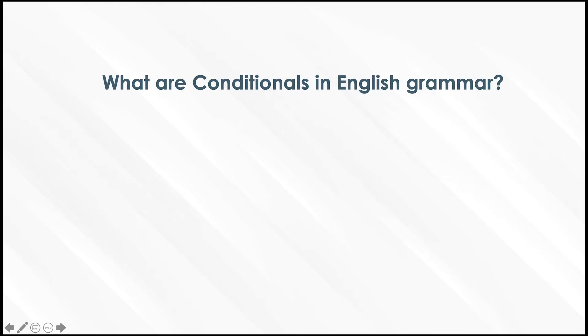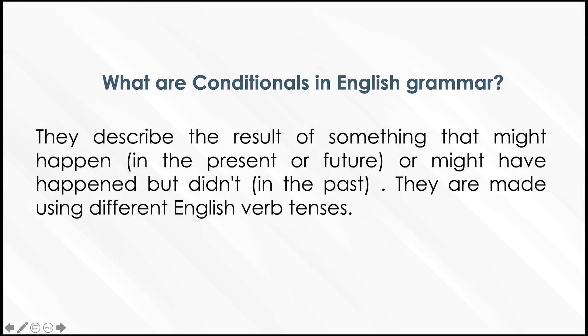The first important thing that we have to know is what are the conditionals in English grammar. They describe the result of something that might happen in the present or future, or might have happened but didn't in the past. They are made using different English verb tenses.